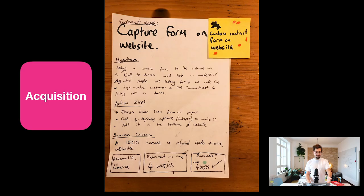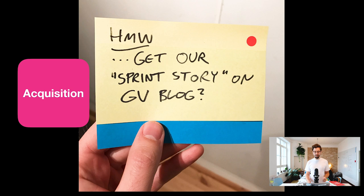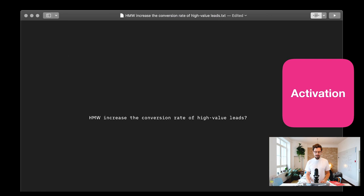Essentially, what these experiments look like in many cases is a one-pager with some detail on it, which we're going to show you the template for later. That's all the company needs to come out with — a couple of these one-pagers, put in order of priority. I found a few images of growth experiments we ran at AJ and Smart: an acquisition experiment of adding a form to our website increased inbound leads by up to 400%. Sometimes it's really, really simple — even just a one sentence thing.